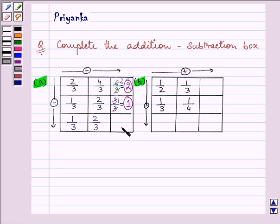Now, since we are moving downwards, we need to subtract. 2 minus 1 will give us 1. So these are the required answers for part A. Whereas, talking about part B, now here we have unlike fractions.